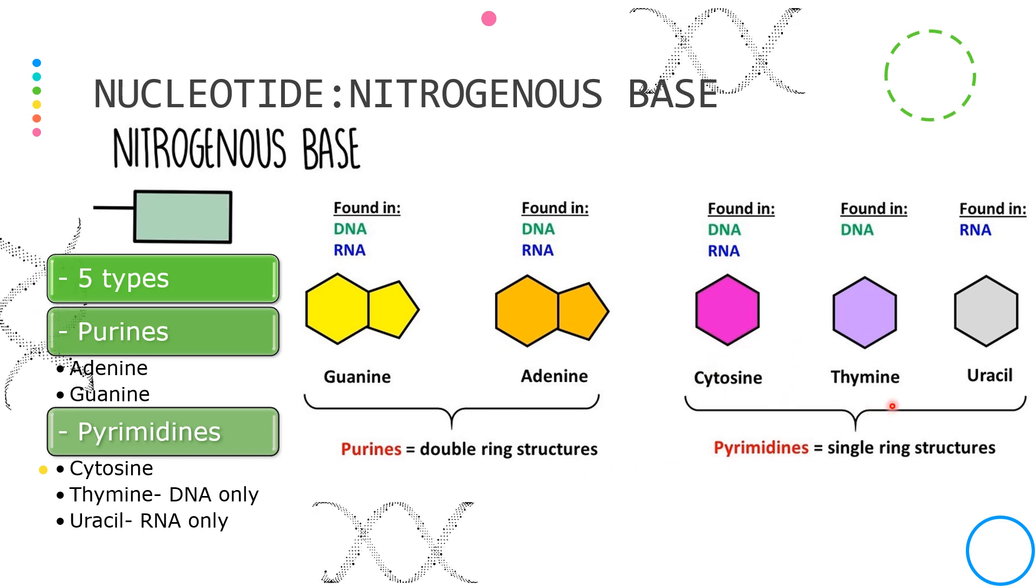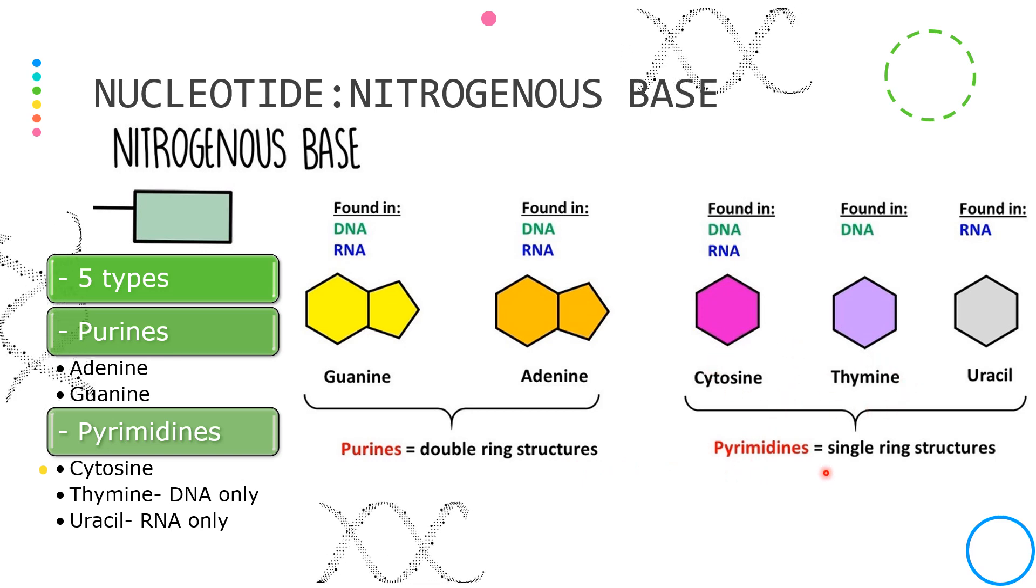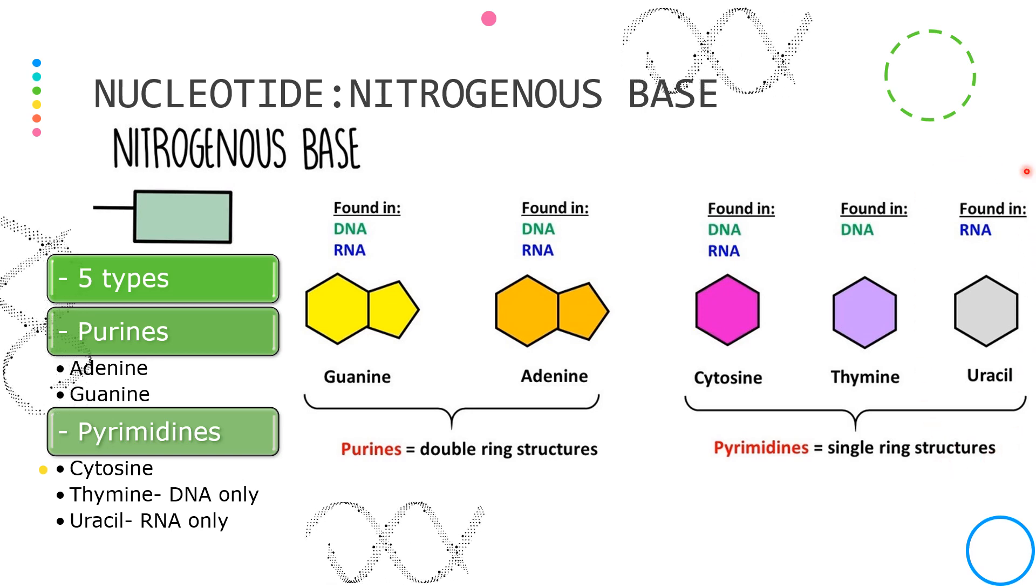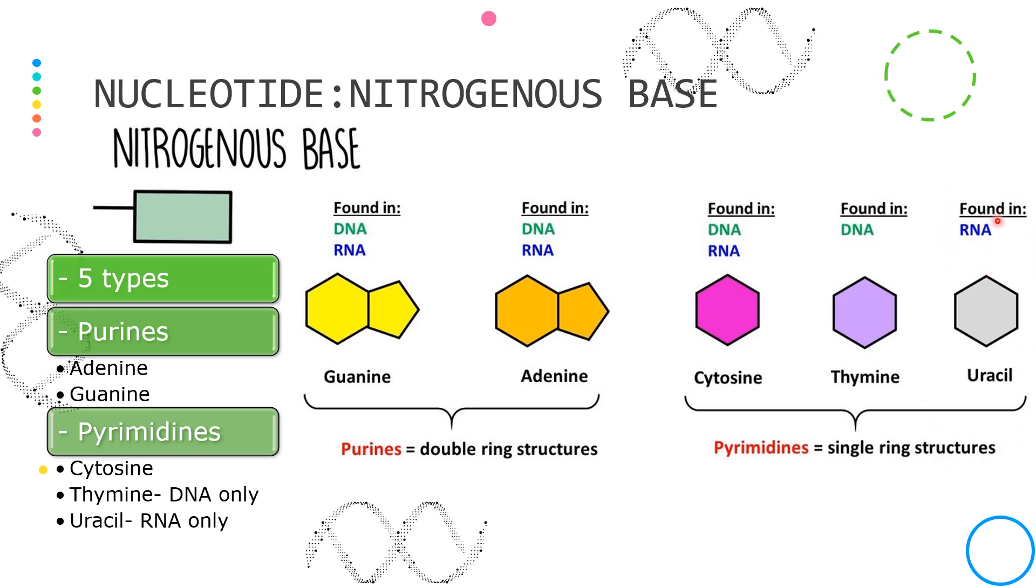Cytosine and thymine are classified as pyrimidines, which are single ring structures. Uracil is not found in DNA, but only found in RNA.